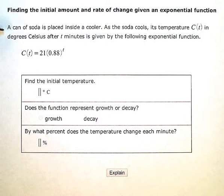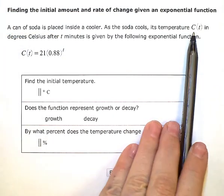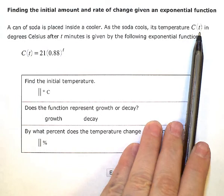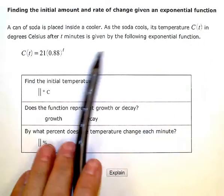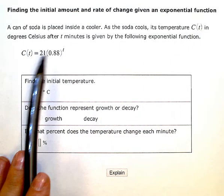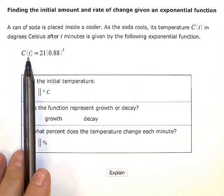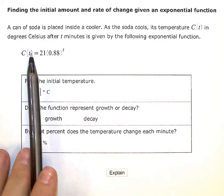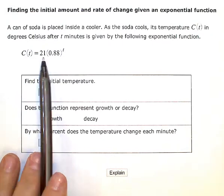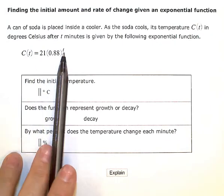its temperature C(t) in degrees Celsius after t minutes, so the temperature in Celsius is a function of t, the time in minutes, is given by the following exponential function. So the temperature in Celsius as a function of t time is equal to 21 times 0.88 raised to the exponent t.